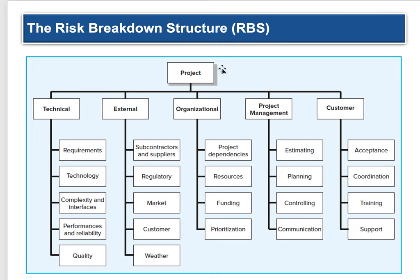Looking at an RBS — a risk breakdown structure: you look at risk in terms of the technical, the external, the organizational, the project management itself, and the customer. Technical: what are the requirements, technology, interfaces, quality? External: who are you depending on — suppliers, subcontractors, regulatory agencies like OSHA? What's going on in your market, with your customers, with the weather? For example, if you're building swimming pools and it's pouring rain, it's going to be hard to dig a hole in the ground. Organizational: project dependencies, resources — do we have enough resources, enough funding? What's the priority? Is the project dependent on other departments being affected?